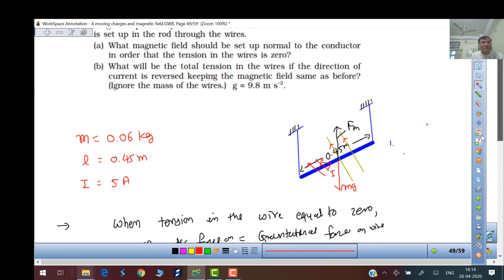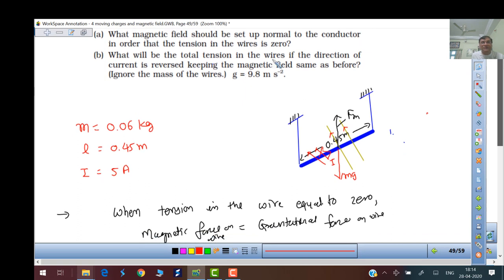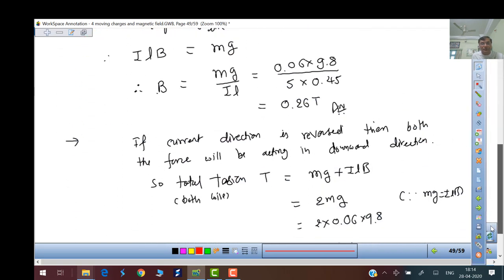Second question: what will be the total tension in the wire if the direction of the current is reversed? So the current is reversed, the magnetic field is in the same direction, so now both forces are in the same direction. This is ILB and this is mg, so total force becomes ILB plus mg.